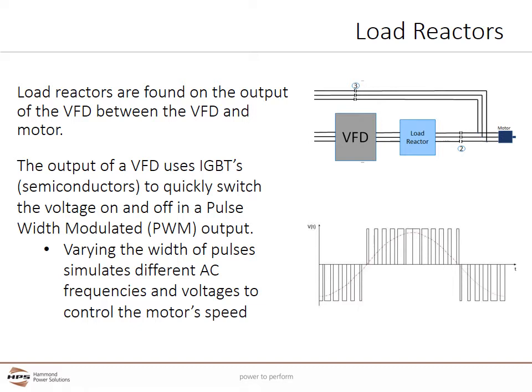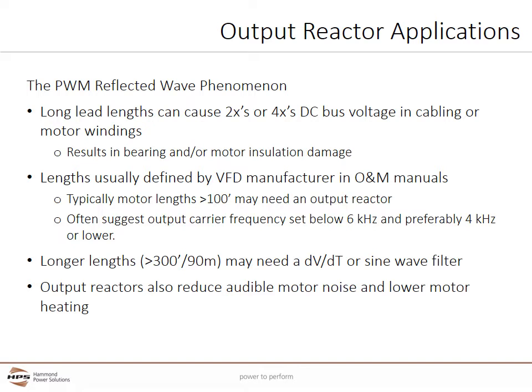Load Reactors are found on the output of the VFD between the VFD and the motor. The HPS Centurion CRX line reactors can be used interchangeably on the line and load side of the VFD. The output of a VFD uses IGBTs, a type of semiconductor, to quickly switch the voltage on and off in a pulse width modulated (PWM) output. Varying the width of the pulses simulates different AC frequencies and voltages to control the motor speed. The output of a VFD can cause the PWM reflective wave phenomenon. Long lead lengths can cause voltage spikes of 2 or 4 times the DC bus voltage to appear in the cabling or motor windings.